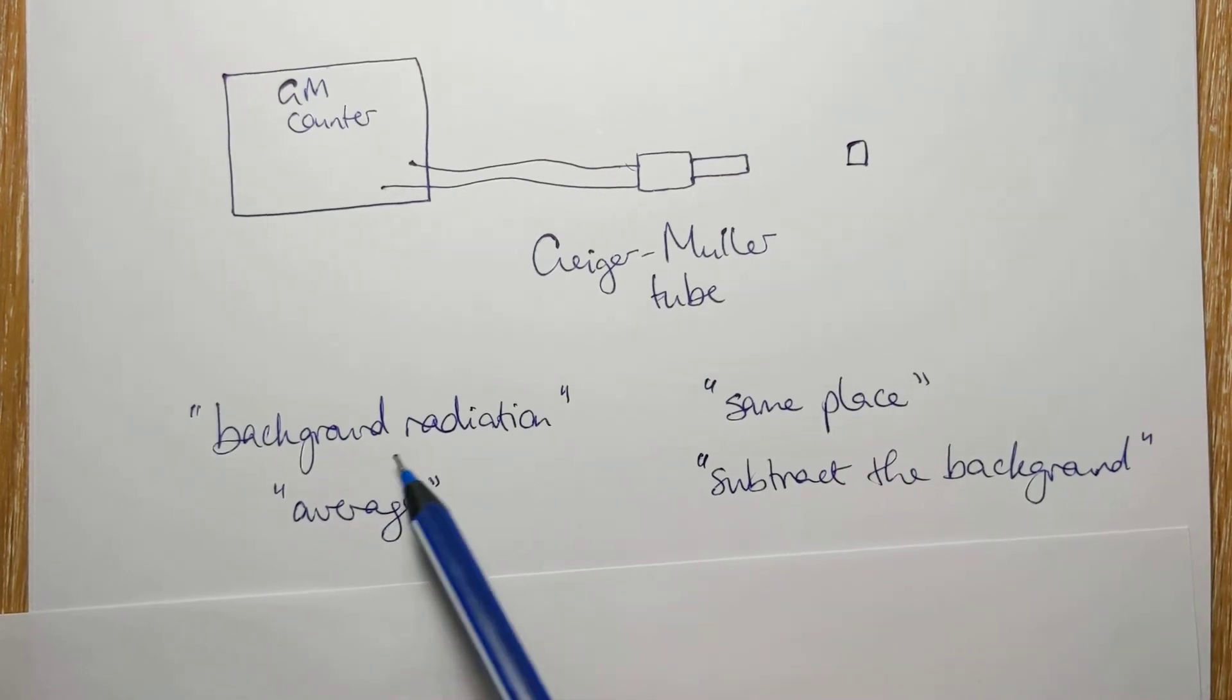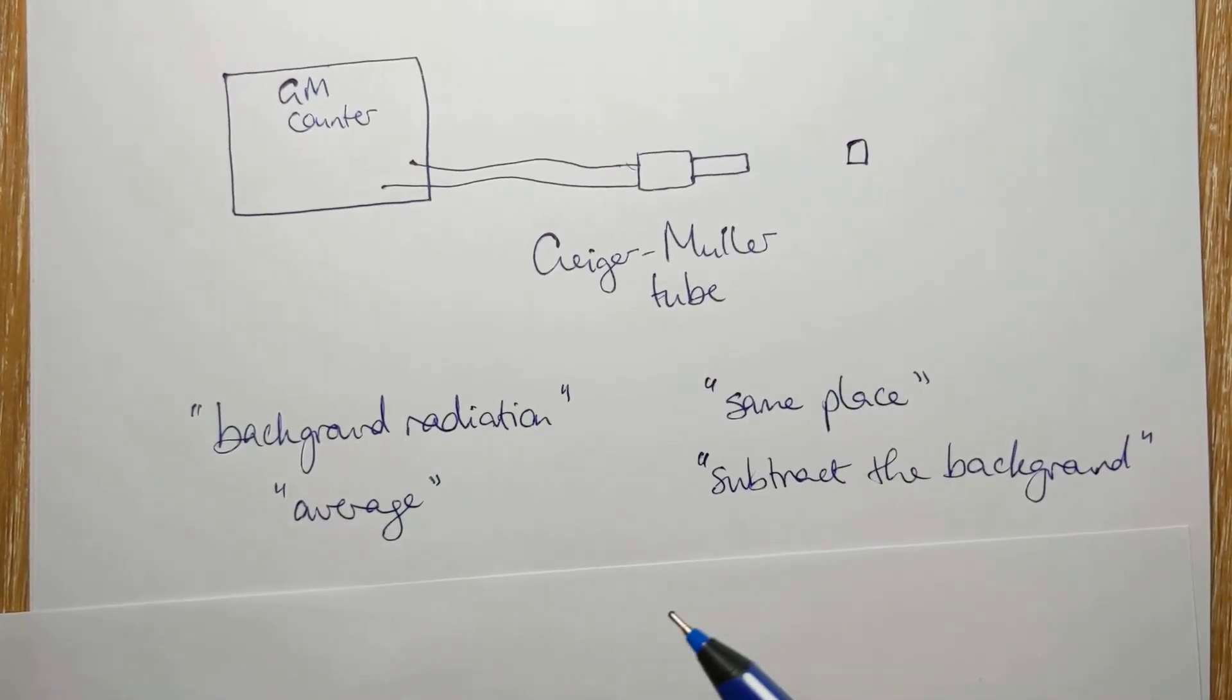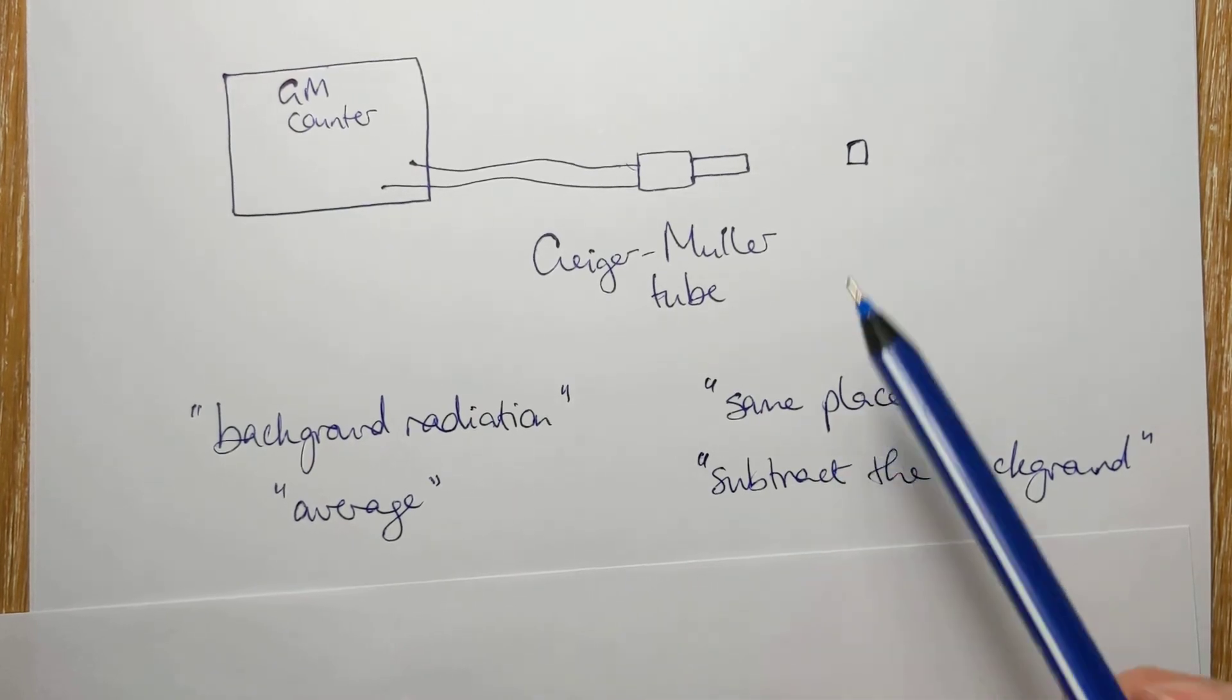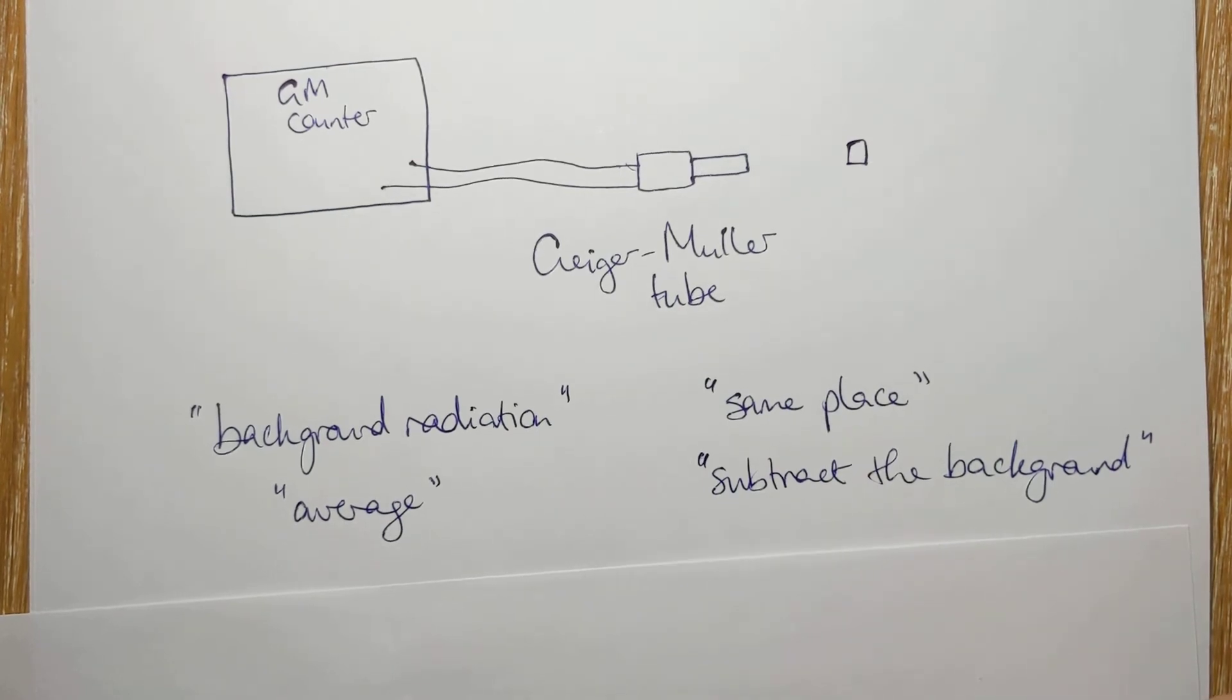You then subtract the background count from your count, and that gives you just the count from the source. Then you're going to plot that on a graph and use your graph to find the half-life.